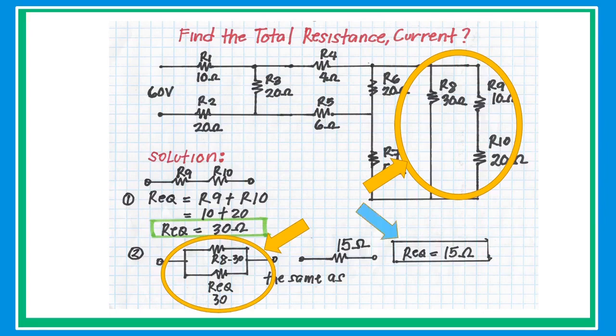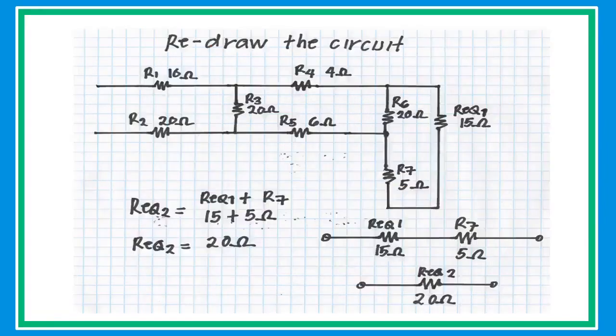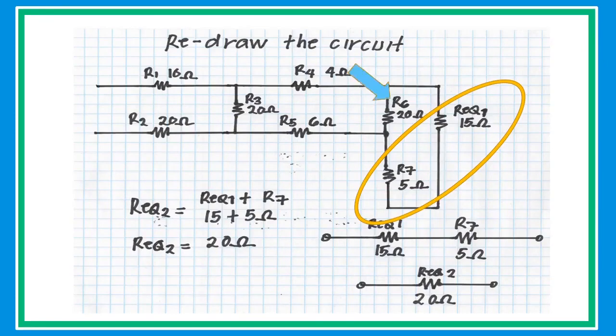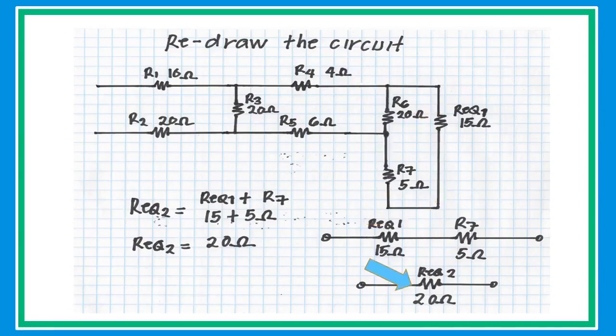Redraw the circuit to simplify. Since R equivalent and R7 are connected in series, add them together. However, you cannot add R6 because there is branching at R5. Add R equivalent and R7 to get the value of 20 ohms.